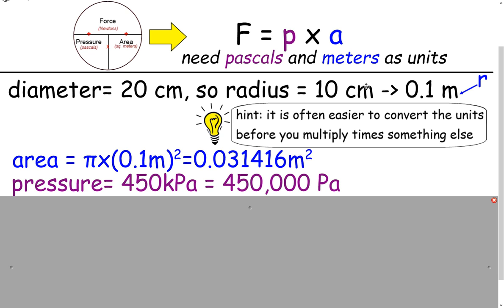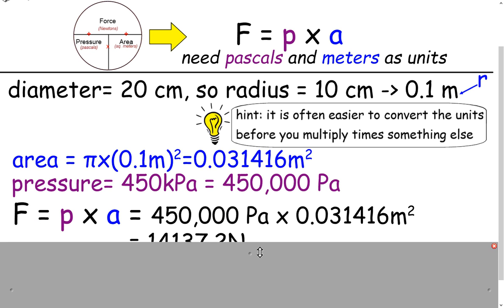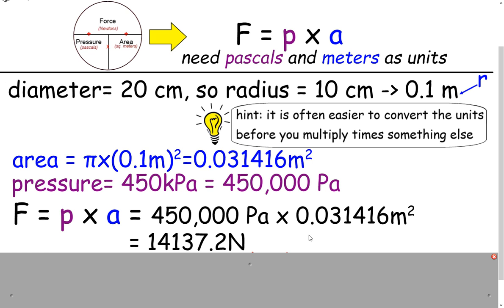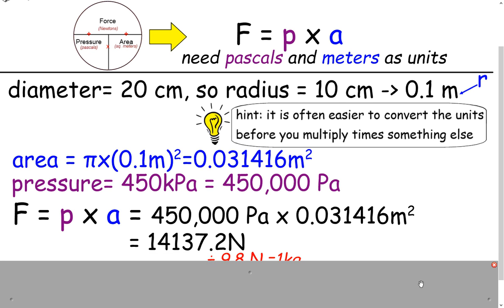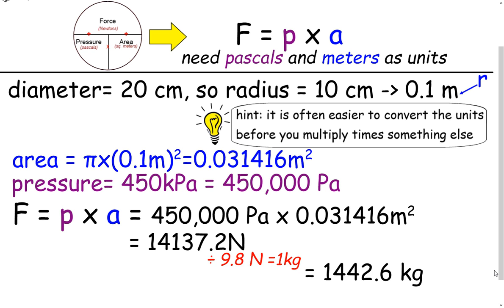So force equals pressure times area — multiply them together and you end up with a force in newtons: 14,137.2 newtons. But we were asked to put it into kilograms. Remember the conversion: it's 9.8 newtons per 1 kilogram, so we divide by 9.8 and we get our answer of 1,442.6 kilograms.